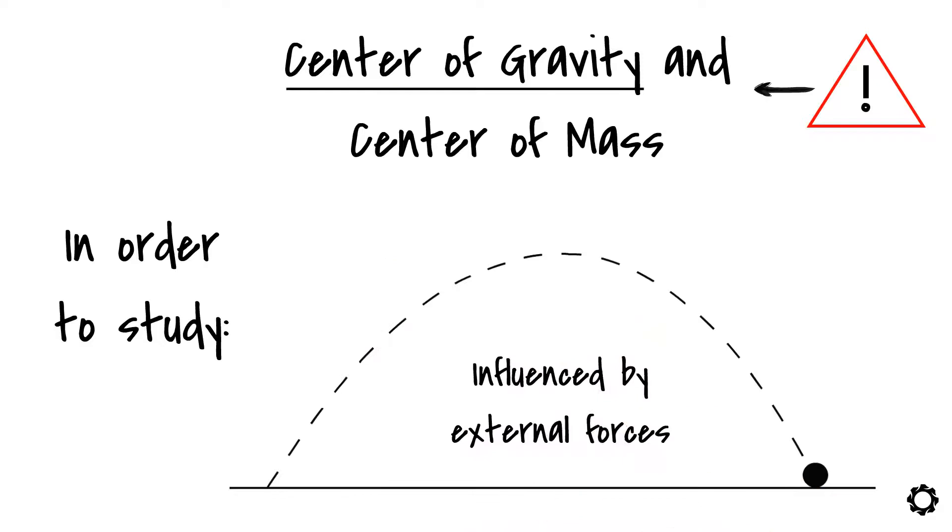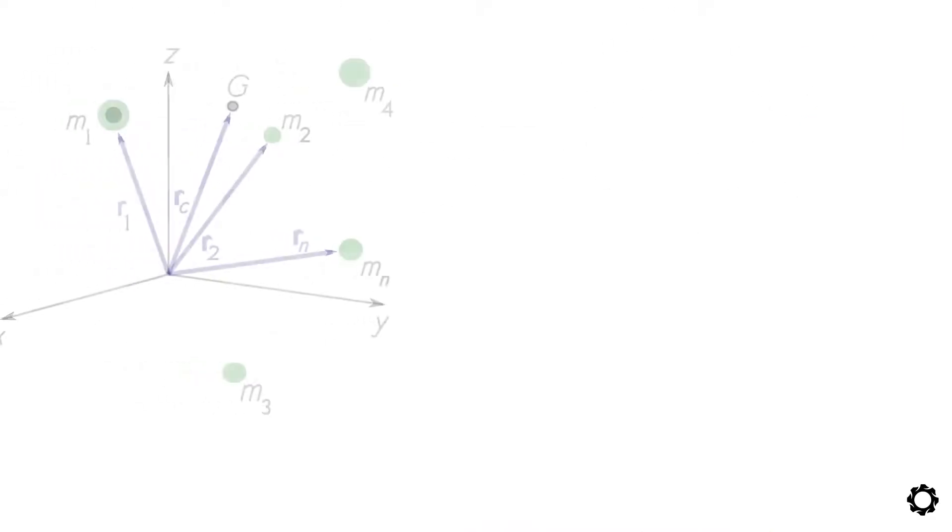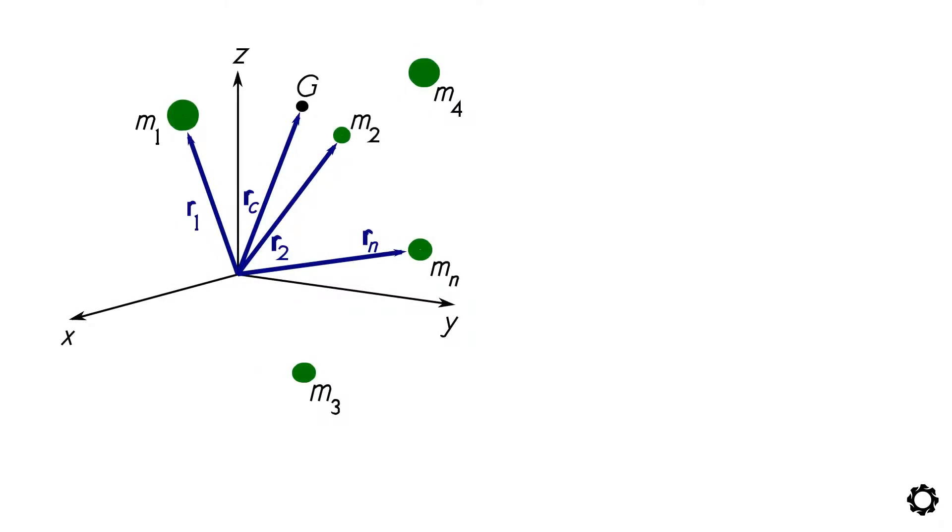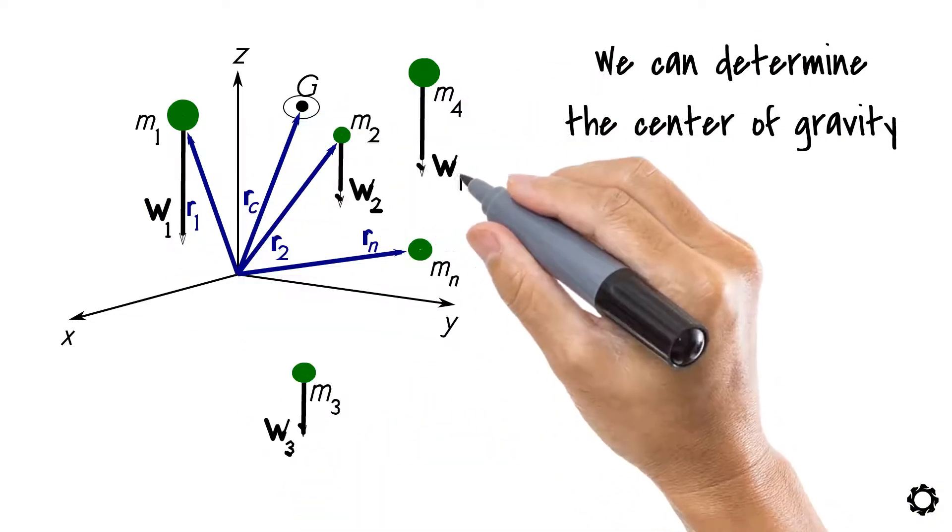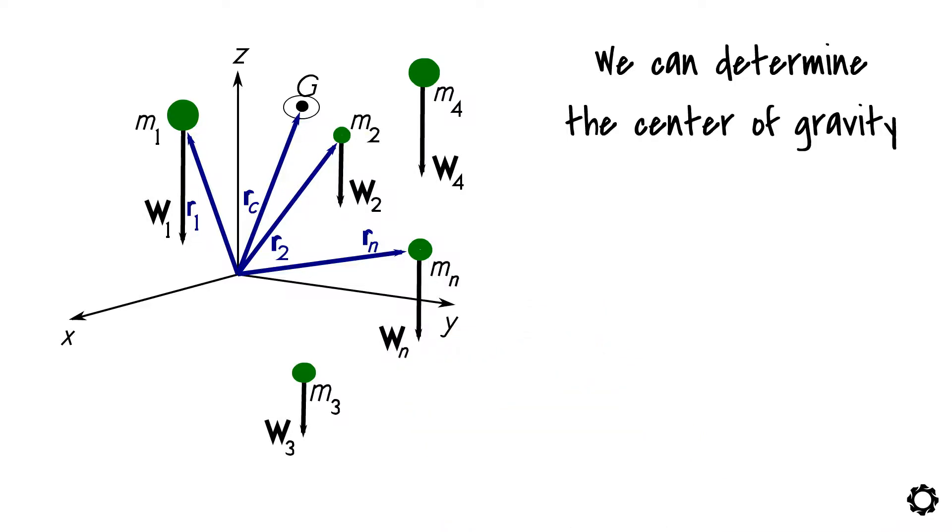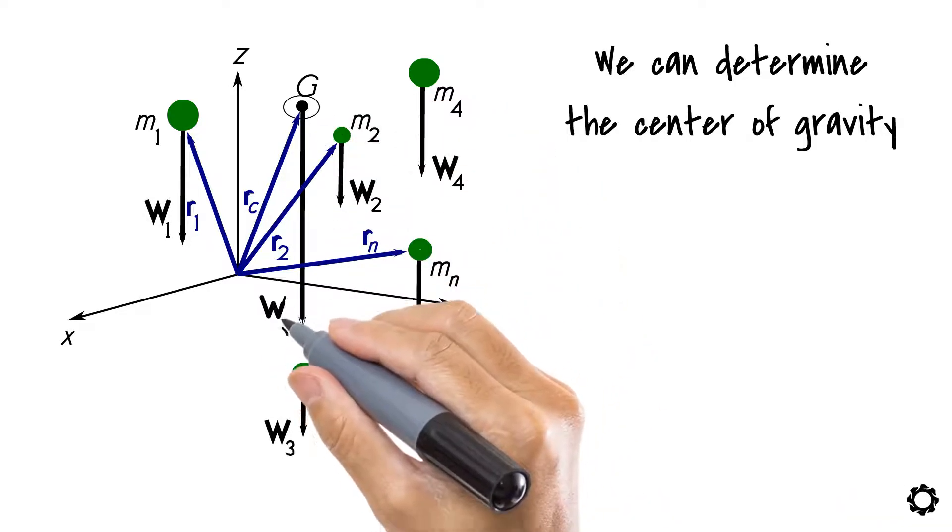So what does center of gravity mean? Consider the following system which consists of multiple particles that are fixed within a region of space. We can determine the center of gravity of this system by replacing the weights of the particles, which can be idealized as parallel forces, by a resultant weight at the defined point G.